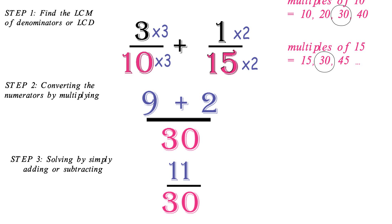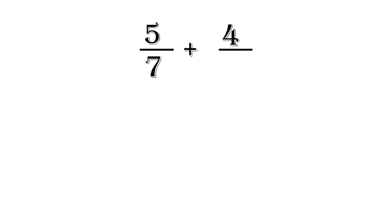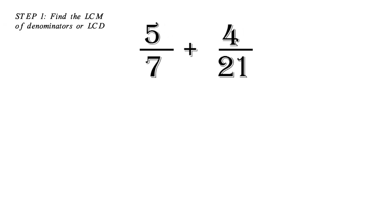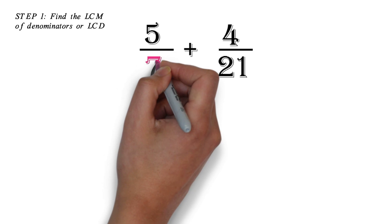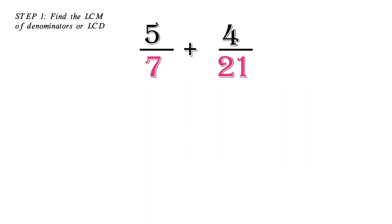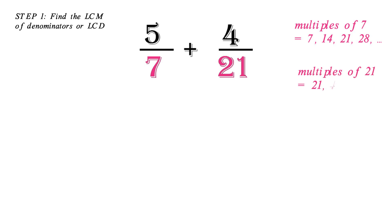Example 2. We want to revisit our first question, but this time solve it with the LCM method. So we had 5 over 7 plus 4 over 21. Step 1: find the LCD of 7 and 21. The multiples of 7 are 7, 14, 21, 28, and so on. The multiples of 21 are 21, 42, 63, and so on. You will notice that the least common multiple is 21, which will also be the denominator.